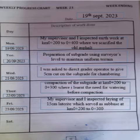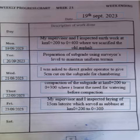On Friday, it says my supervisor and I inspected the laying of 15cm laterite, which served as the subbase at km 0+200 to 0+300. When you state a work you've done, make it detailed and as brief as possible. It says 15cm — it's not just laying of laterite. The laterite laid is 15cm thick. This communicates to your lecturer that the thickness of the subbase used in the road construction is 15cm, which is actually very appropriate.